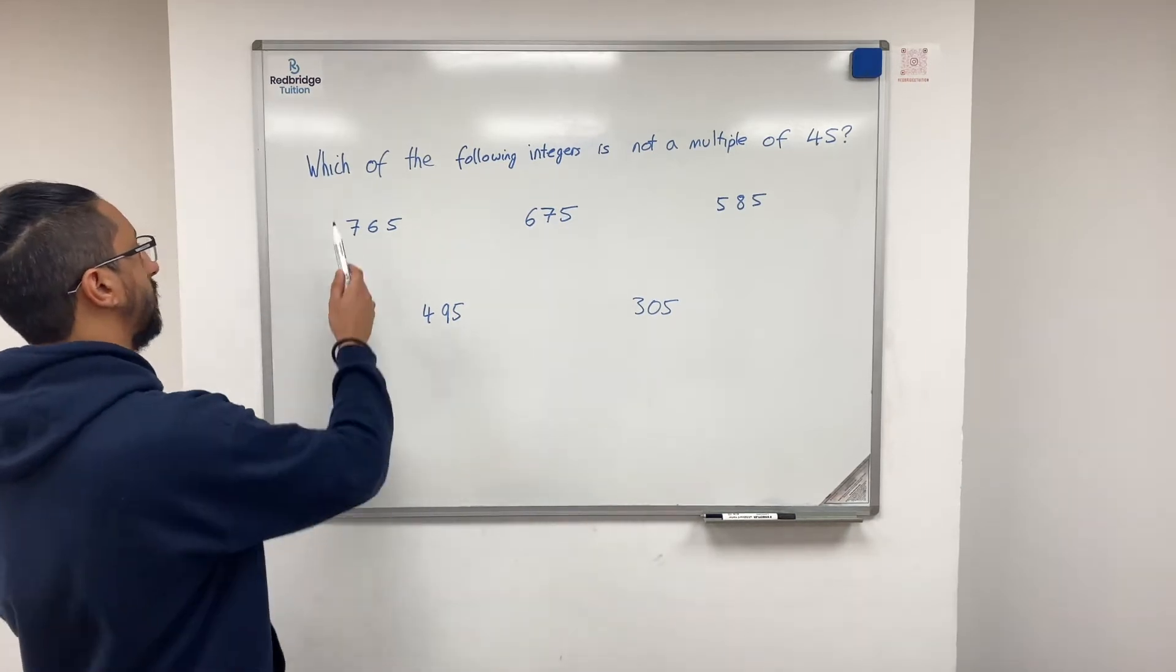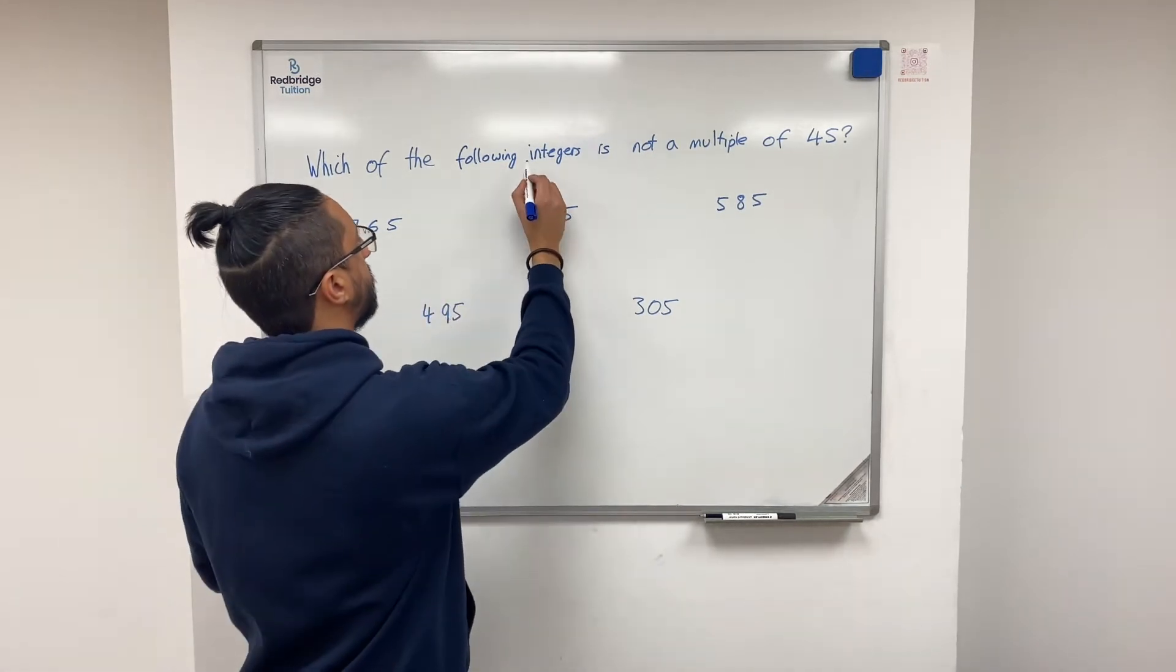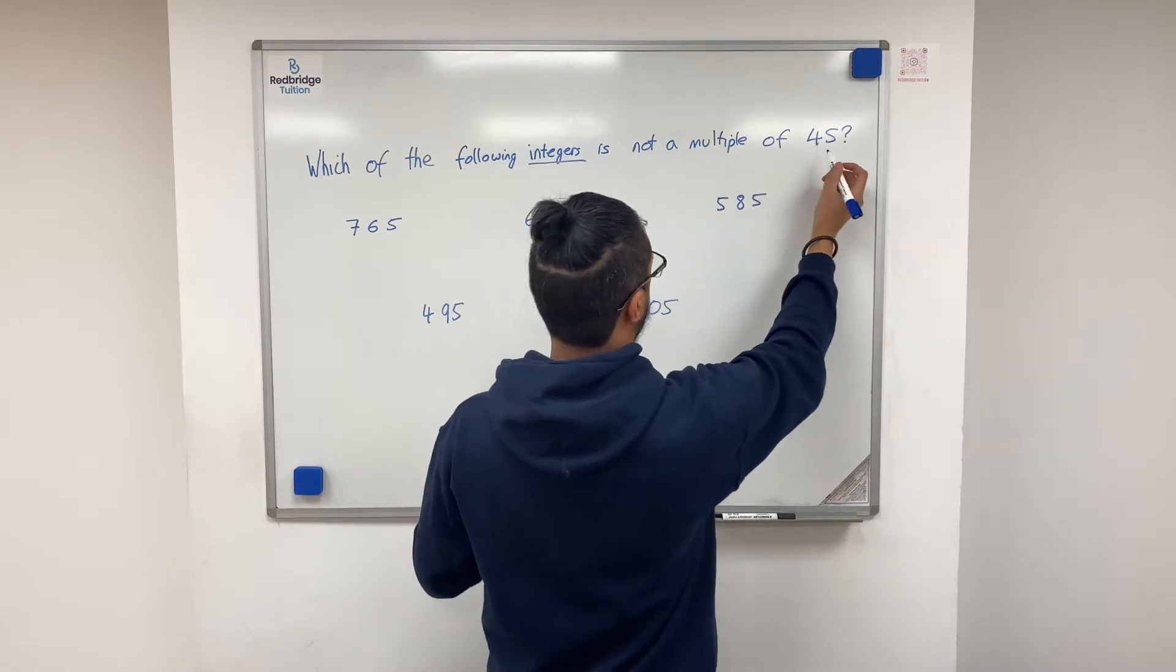Okay, so our question today is, which of the following integers is not a multiple of 45?